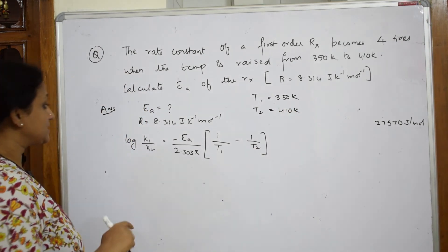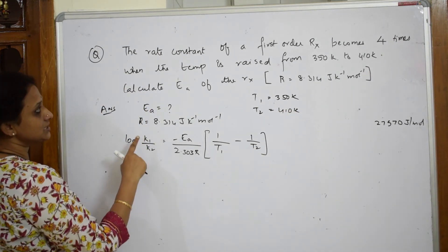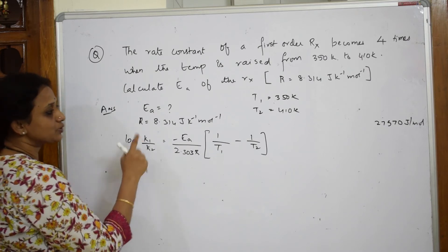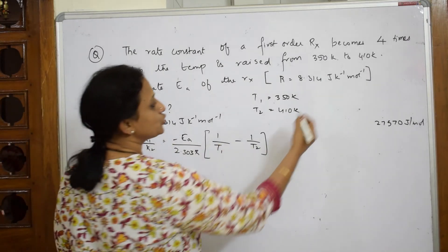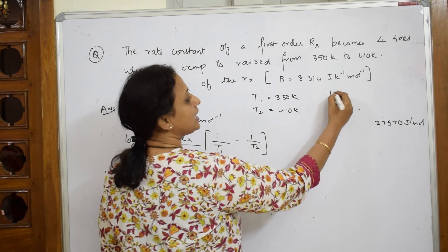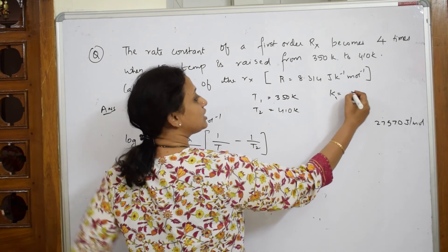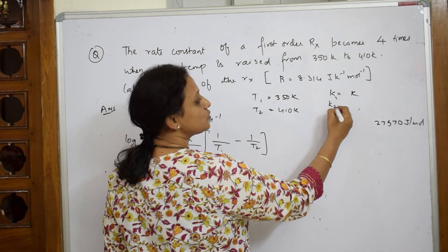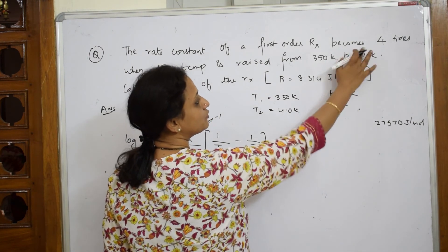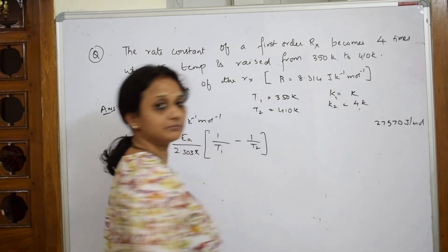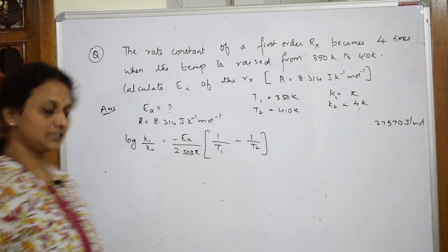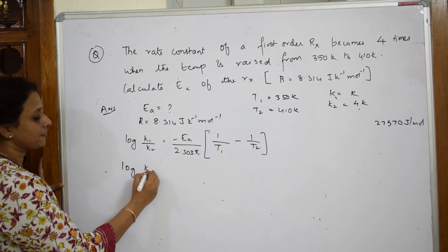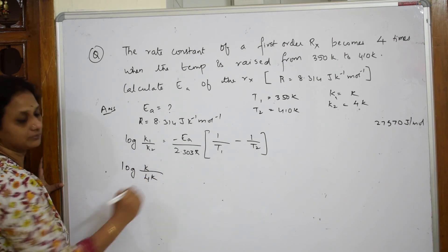They said the rate constant becomes four times. That means if I assume K1 is equal to K, then K2 has become four times, so K2 is equal to 4K.